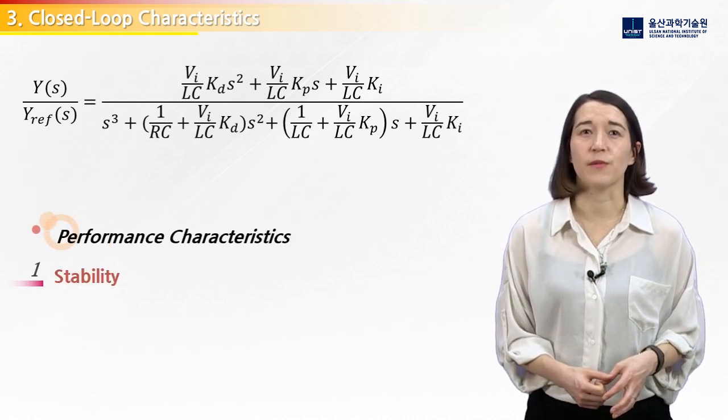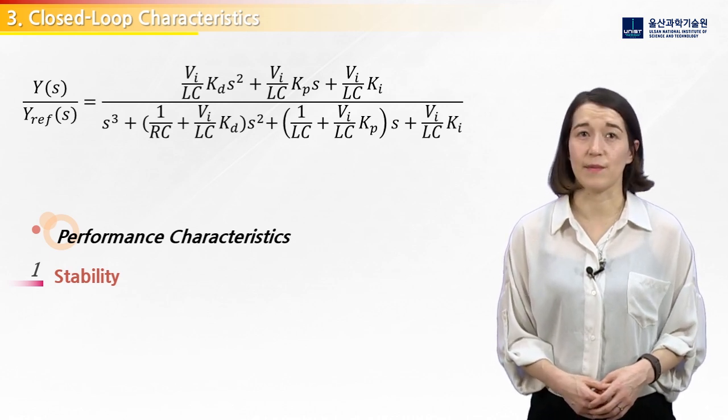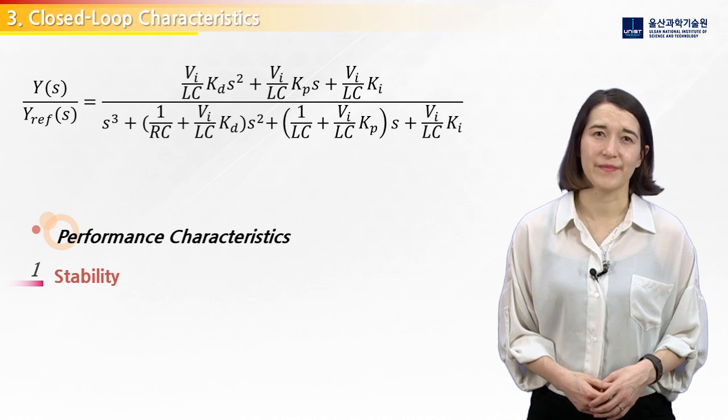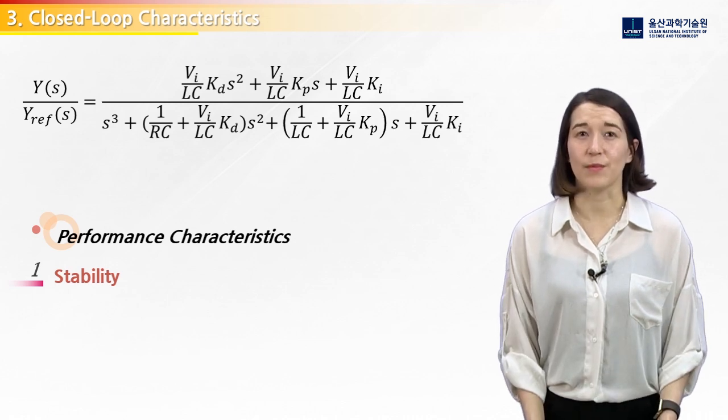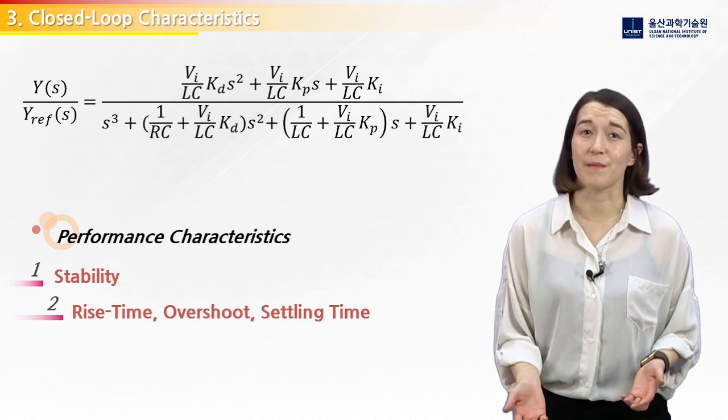Our first priority for performance is always stability. If our system is not stable, the other characteristics do not matter. After we ensure the system is stable, we can optimize the poles for things like rise time, overshoot, or settling time.